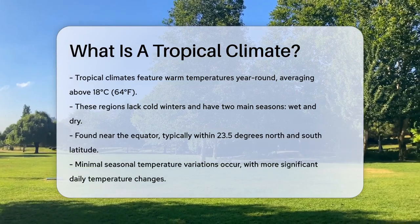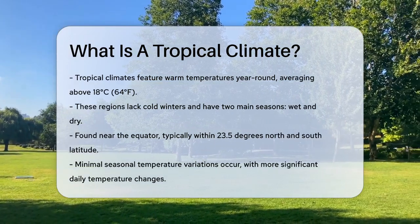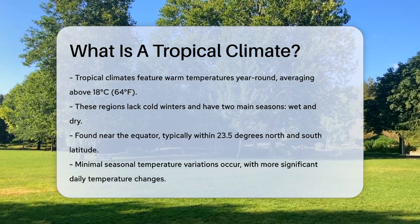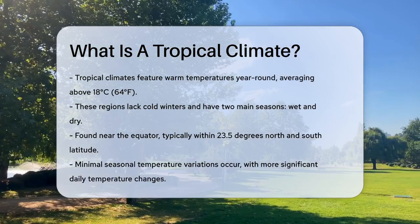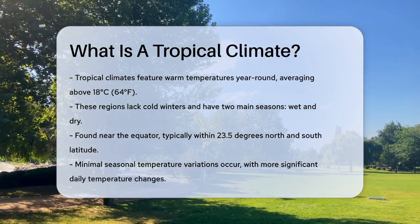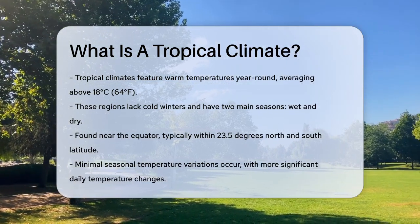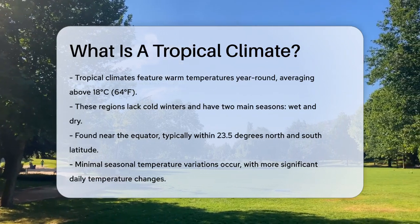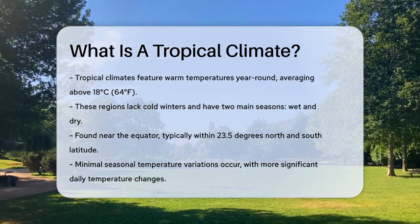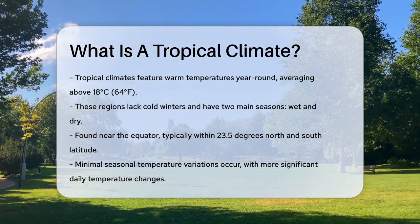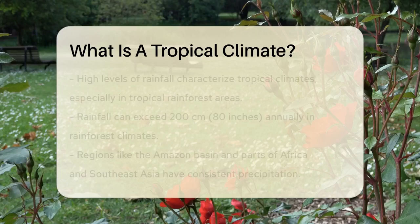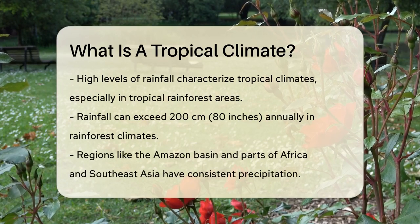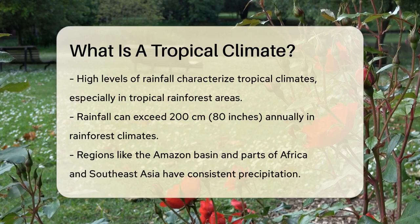There are no cold winters here. Instead, you have two main seasons: a wet season and a dry season. Tropical climates are found near the equator, typically within 23.5 degrees north and south latitude. Here, the sun's path across the sky changes very little throughout the year, resulting in minimal seasonal variations in temperature. This means that the daily temperature changes are more significant than the annual changes.